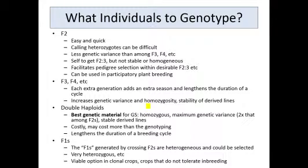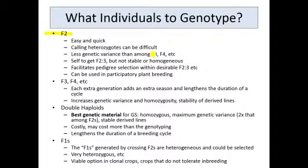So what individuals might you genotype in a rapid cycling scheme? You can always start with the easiest option, which is F2s. They're easy and quick, but there are some disadvantages. F2s are highly heterozygous, and heterozygotes can sometimes be difficult to score in some species and genotyping systems. In an F2 population, there's less genetic variance than you'd get in an F3 or F4 population. But you can self the F2s if they're not stable or homogeneous, and those F2-derived families can go out to the field. The fact that those F2-3 families are still segregating can actually facilitate pedigree selection within desirable F2-3s.